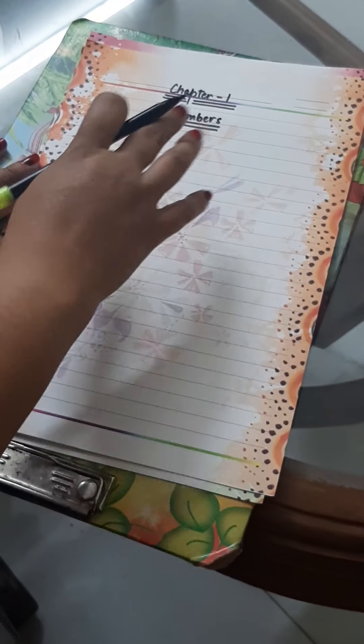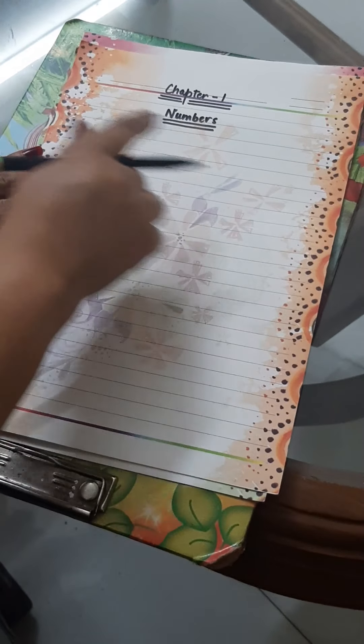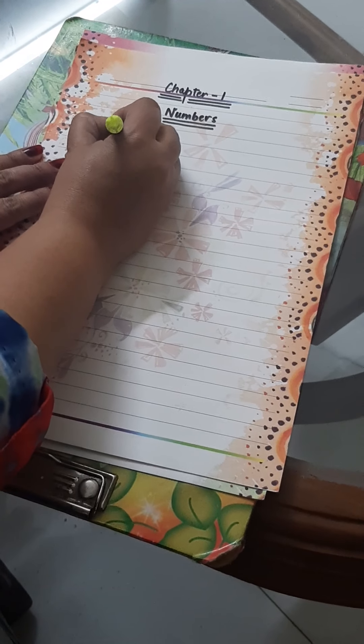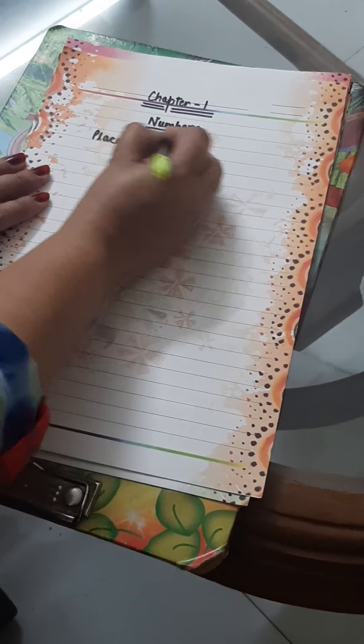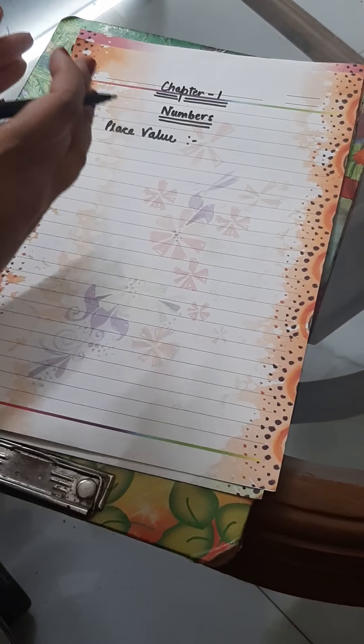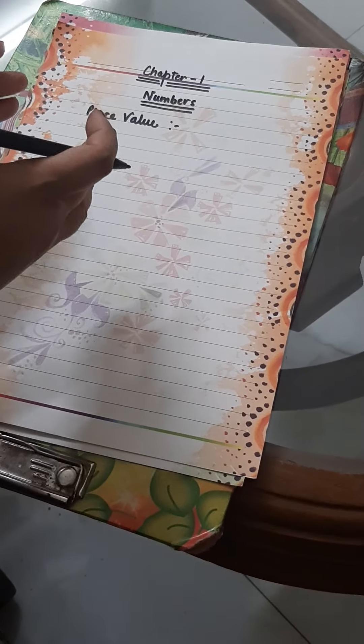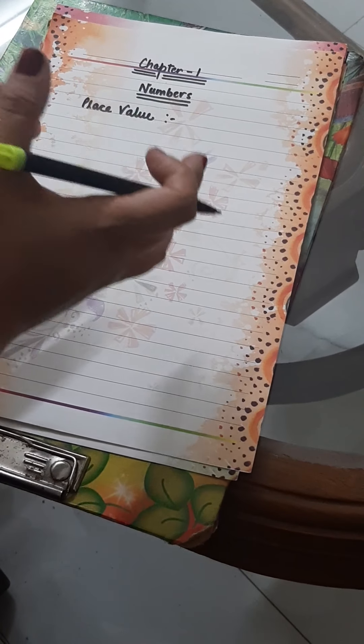Let us start doing the numbers, but before doing the numbers, you should know the place value fact. What is actually the place value? Place value is the value of a digit in a number.